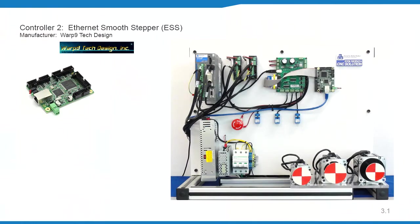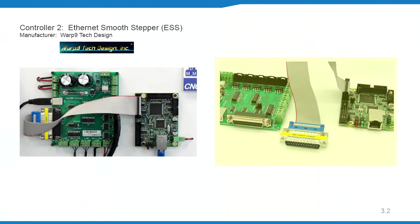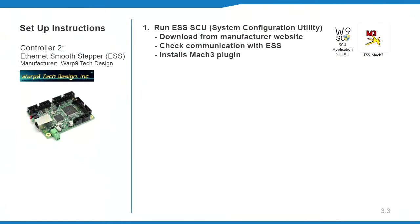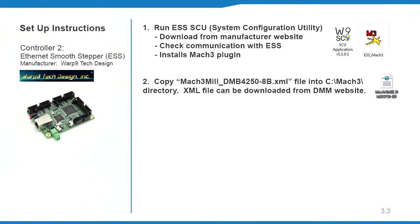The Ethernet Smoothstepper, or ESS, is also connected directly to the DMB breakout board. Connect the DMB breakout board to the ESS port 1 using an LPH26 to male DB25 cable. Connect the 5V power supply to the ESS. Connect the ethernet cable from the ESS to the PC. Follow the ESS manufacturer's instructions for installation, then run the ESS SCU application to install the Mach 3 driver and configure the networking.